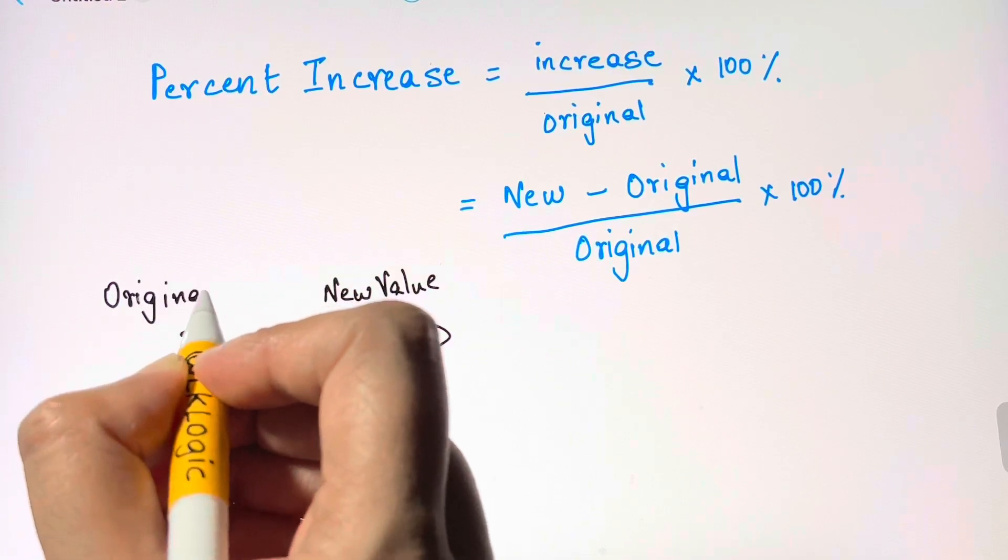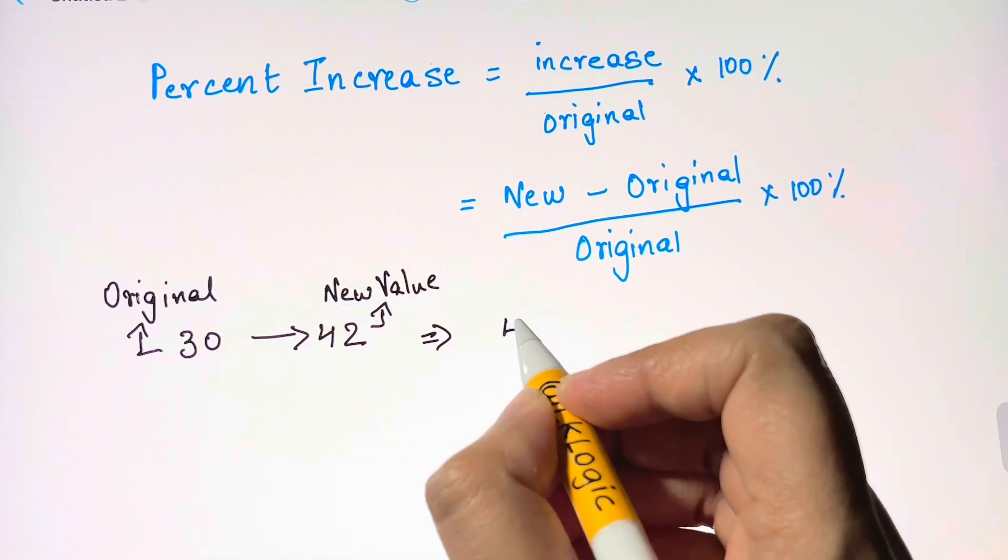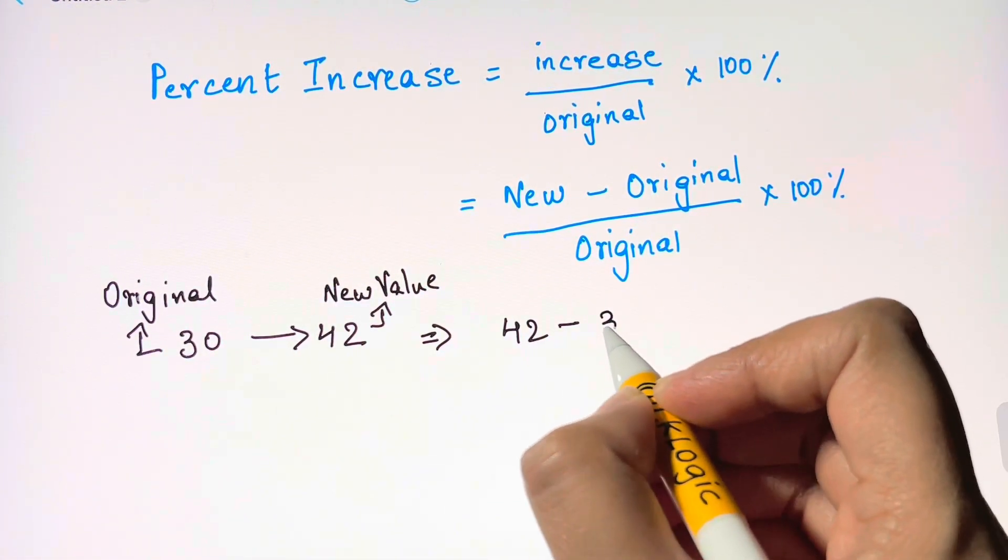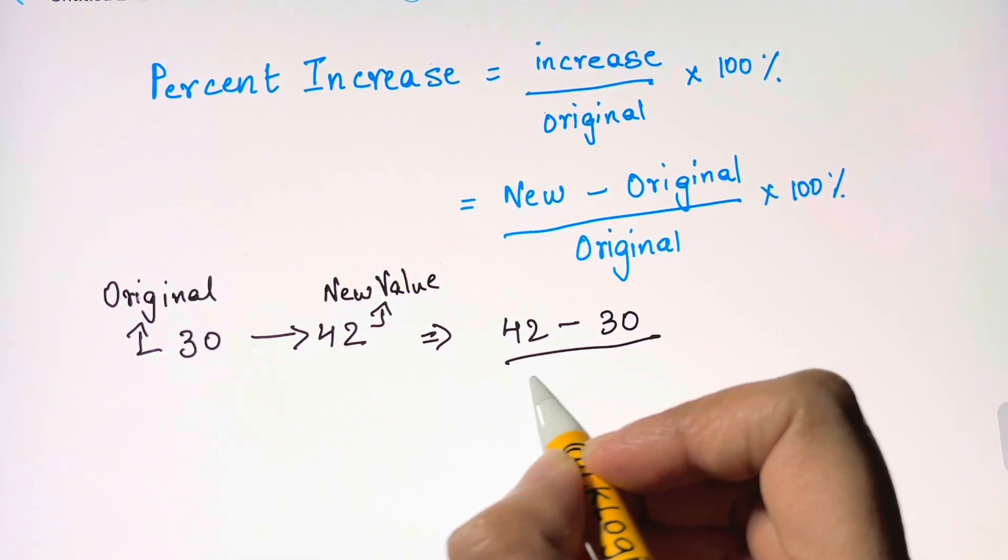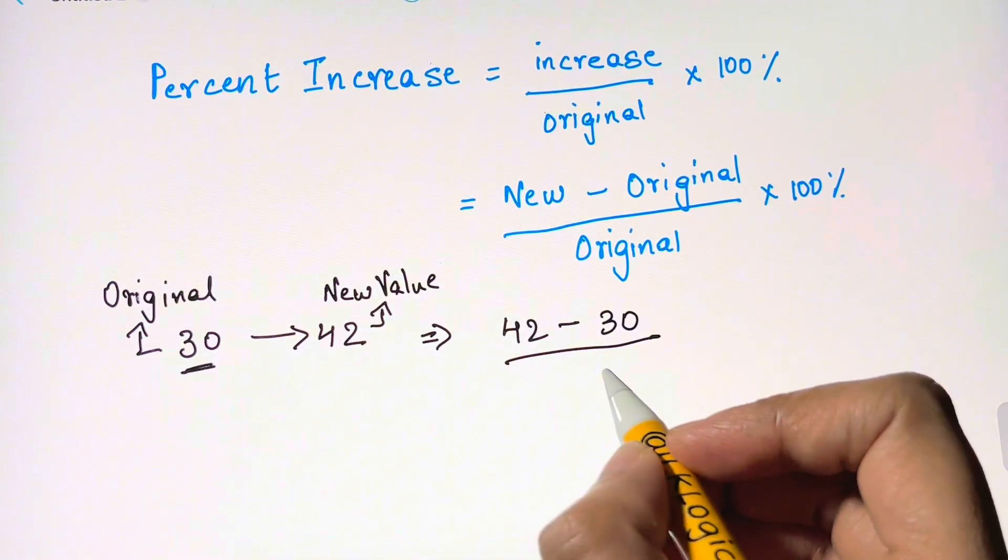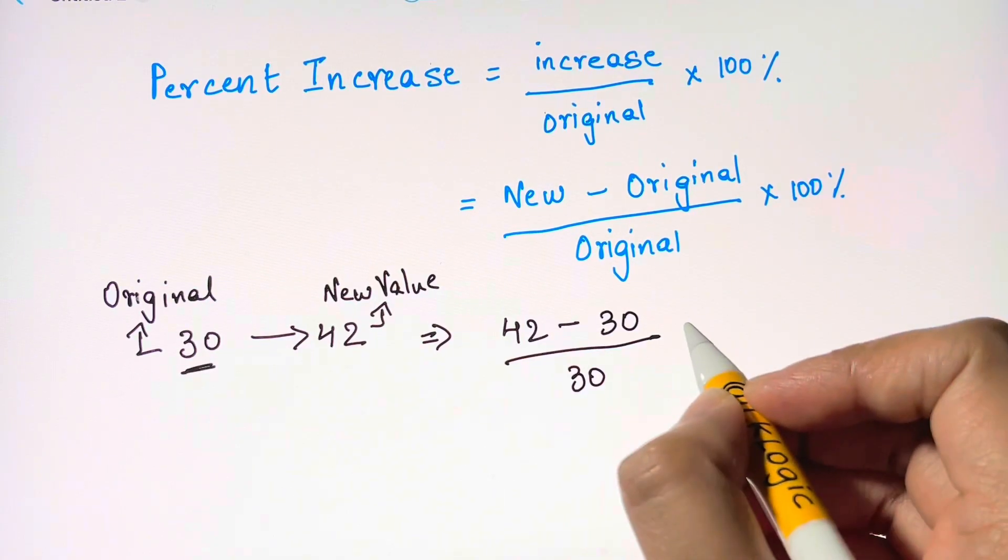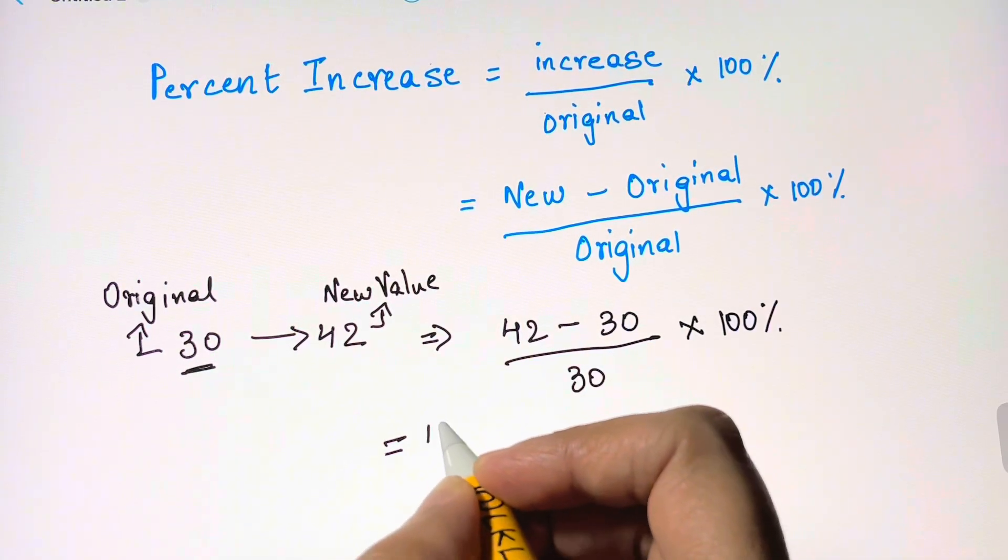So according to this formula we'll have new value minus the original value, that is 42 minus 30, divided by the original value that's 30, times hundred percent. So 42 minus 30 is 12, 12 over 30 times hundred percent.